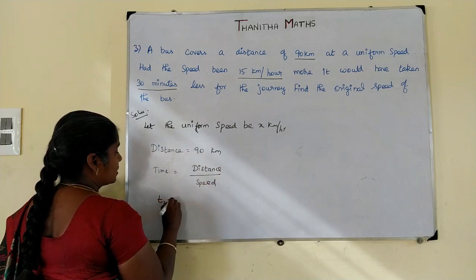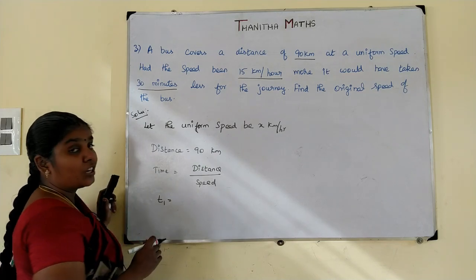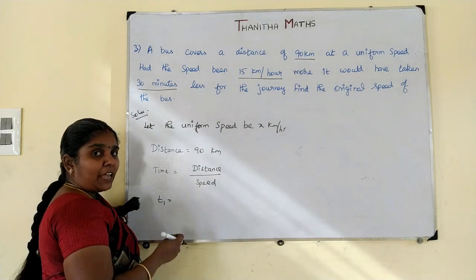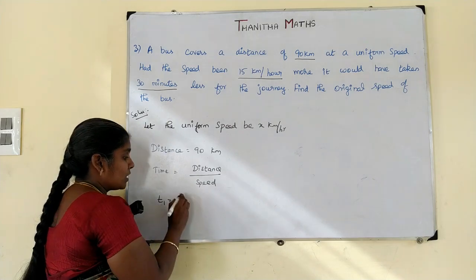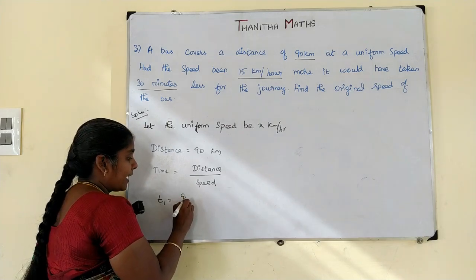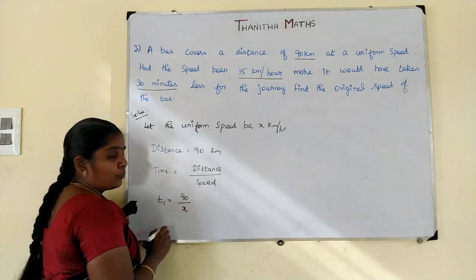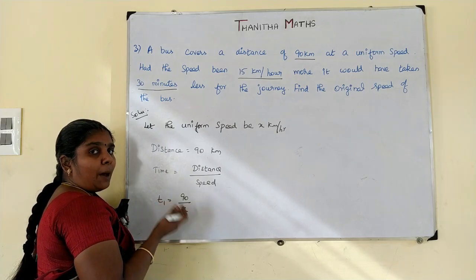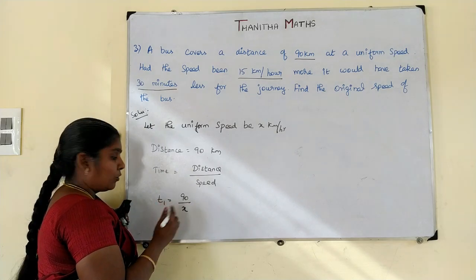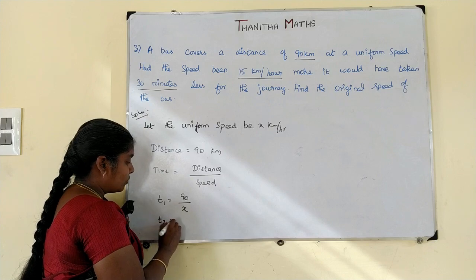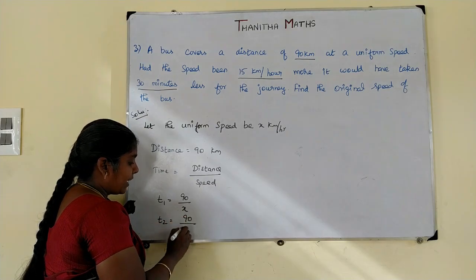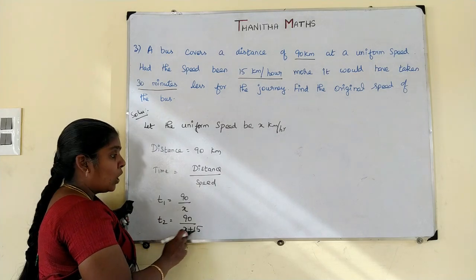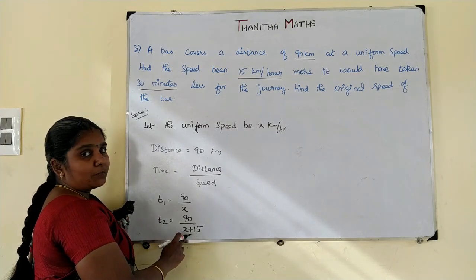At the original speed, time T1 is equal to 90 by x. Suppose the speed increases by 15 km/h, the new time T2 is equal to 90 divided by x plus 15.